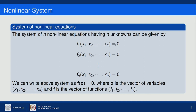Analytically it is very hard to solve this system, and hence we will introduce some numerical methods for solving these equations. If we want to write this system in vector form, consider a vector f which is a vector of functions f₁, f₂, ..., fₙ and a vector x of unknown variables x₁, x₂, ..., xₙ. Then this system can be written as f(x) = 0.